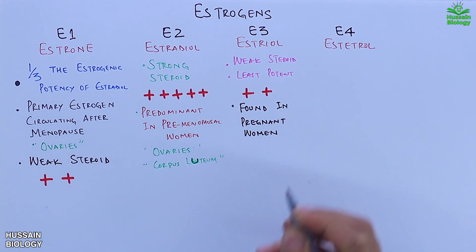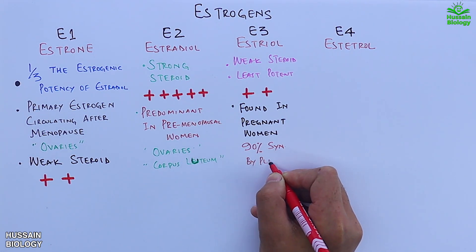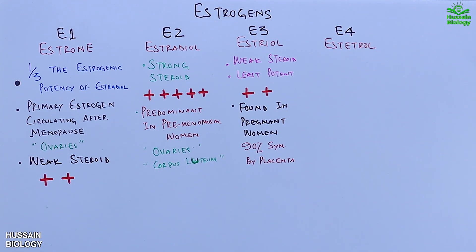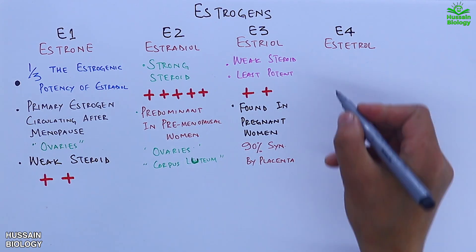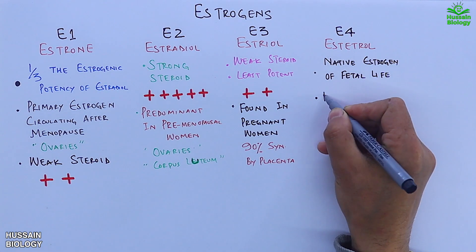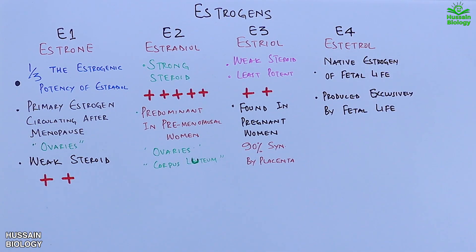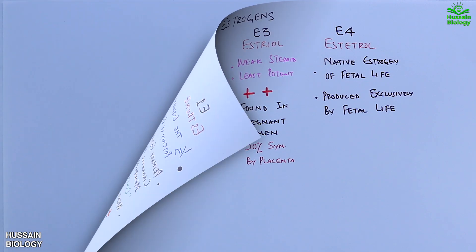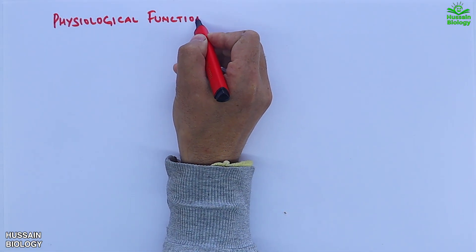Estriol is found in pregnant women, where 90% of this hormone is synthesized by the placenta. E4 (estetrol) is the native estrogen of fetal life. Estetrol is produced exclusively by the fetal liver and is found in detectable levels only during pregnancy.